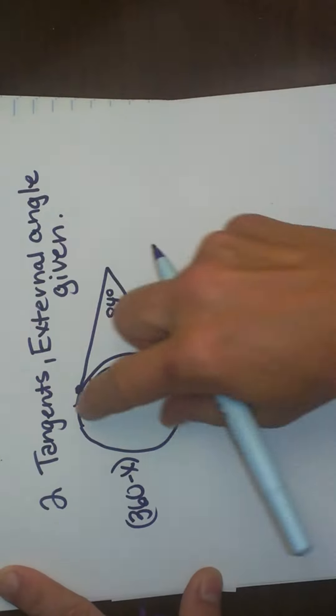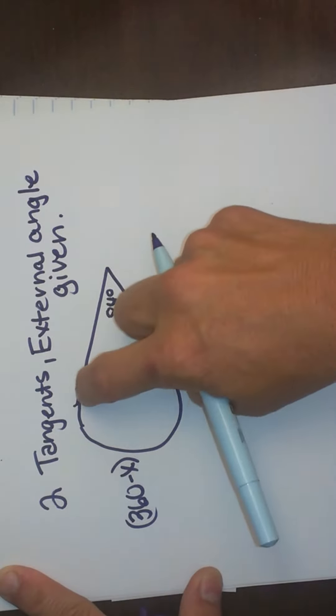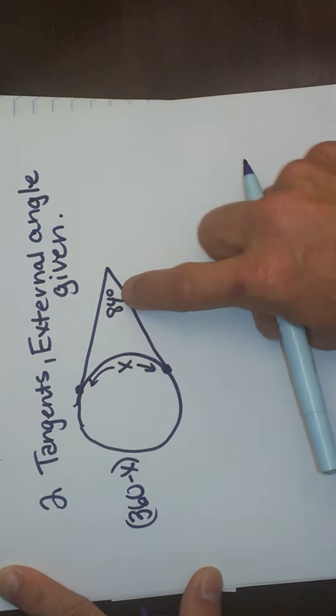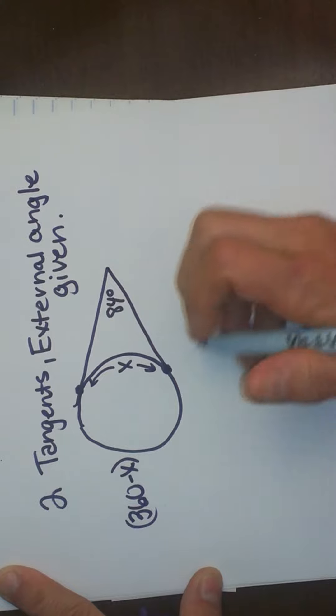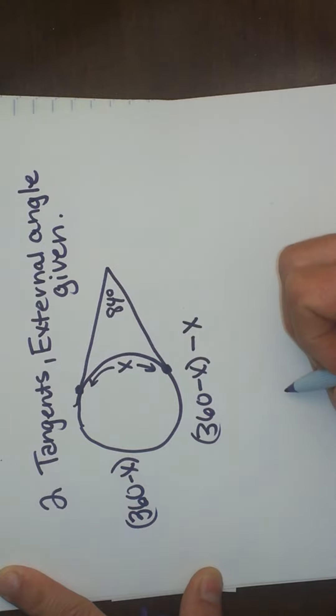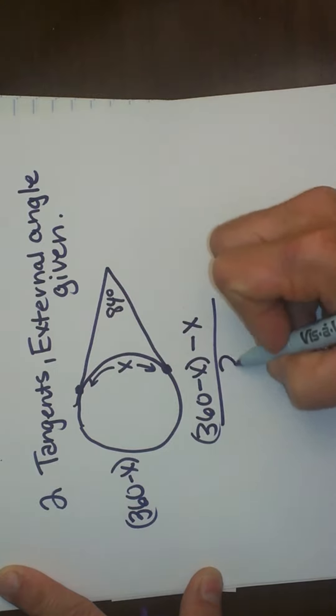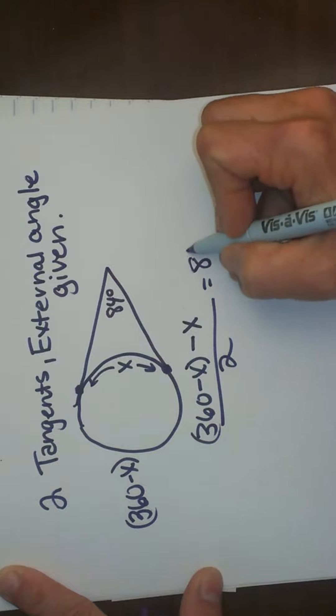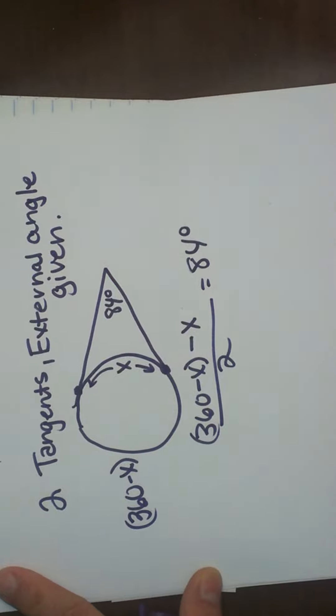Then you use your formula. The larger arc minus the small arc divided by 2 is equal to the exterior angle. So I am going to take the large arc which is 360 minus x and I am going to subtract my smaller arc and I am going to divide it by 2 and I am going to get my exterior angle and there is my formula to set it up.